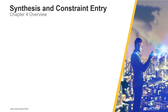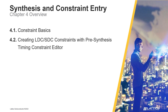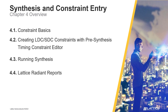Chapter 4 consists of five sections. In the first section, called Constraint Basics, the general flow for constraint creation with Radiant is discussed. In section 2, creating LDC and SDC constraints with the pre-synthesis timing constraint editor is introduced. Section 3 covers running synthesis, discussing Radiant's task detail view and process toolbar. In section 4, Lattice Radiant reports are discussed. Finally, section 5 introduces Radiant's netlist analyzer and how it can be used to analyze a synthesized design netlist.